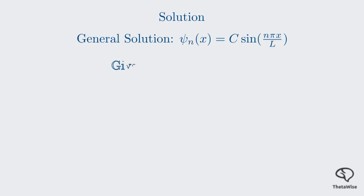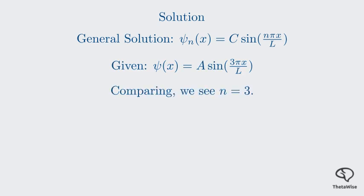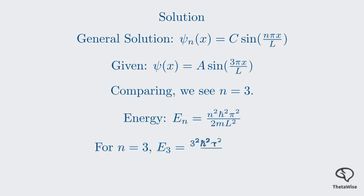All right, let's go over the solution. For the first part, we compare the given wave function to our general solution for the particle in a box. The general solution is ψₙ of x equals a constant times sine of nπx over L. Comparing this to our given wave function, ψ of x equals A times sine of 3πx over L, we can see that the quantum number n must be 3. Now for the second part, the energy of this state. We just use our energy quantization formula: Eₙ equals n²ℏ²π² over 2mL², and substitute n equals 3. This gives us 9 times ℏ²π² over 2mL².